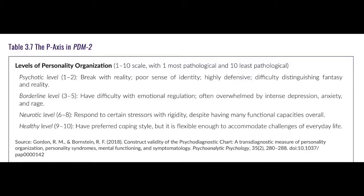The P-axis in the PDM looks at levels of personality organization. If you were assessing somebody on the P-axis, you would rate them on a scale of 1 to 10, with 1 being the most pathological and 10 the least. Somebody who scored a 9 or 10 would have a healthy level of personality organization — their preferred coping style is flexible and accommodates the challenges of everyday life.